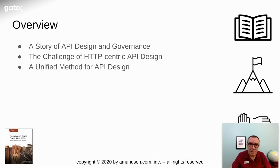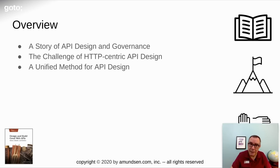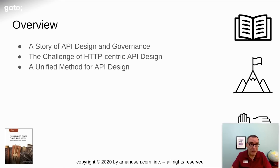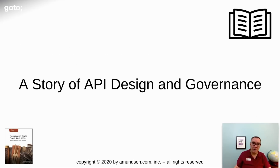I want to talk about a couple of things. First, a story of design and governance — one I've seen played out over and over again that you might recognize. Then I want to drill into the challenge of HTTP-centric API design and why it causes problems. And then I want to come up with at least one idea on how we can get past this challenge, which I call the unified method for API design.